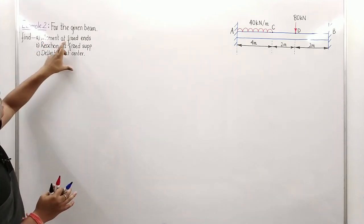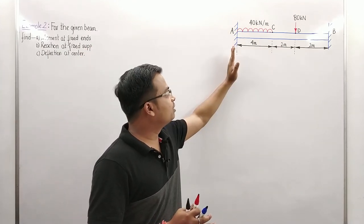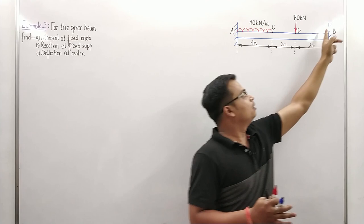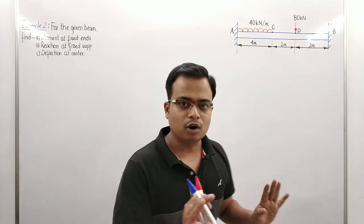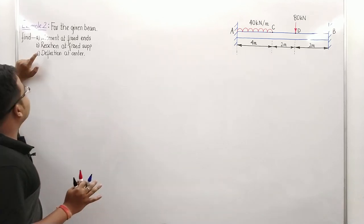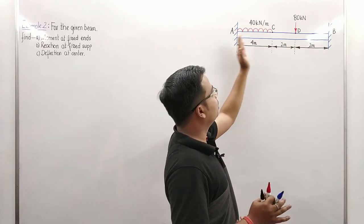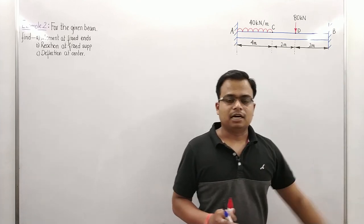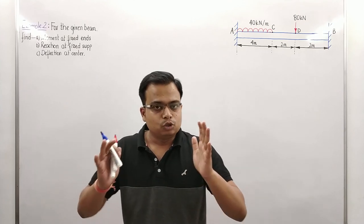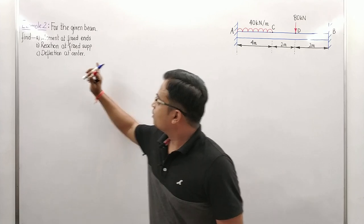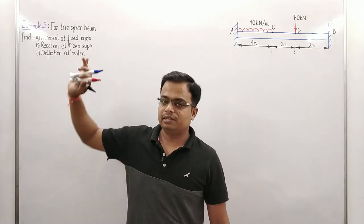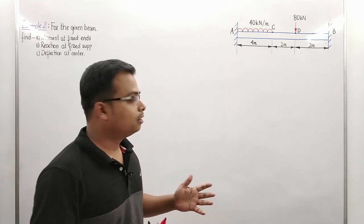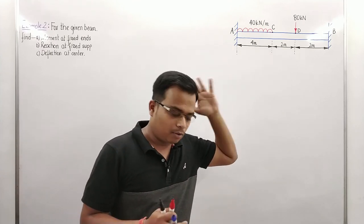Today, the first thing we need to work out is the moment at the fixed ends. This is a fixed beam with a fixed support at the left end (A) and the right end (B), so there are going to be fixing moments of hogging nature — we call them MA and MB. We also need to calculate the reactions RA and RB, and once we have the slope and deflection equations, we can find the deflection at the center by putting x equal to 4.